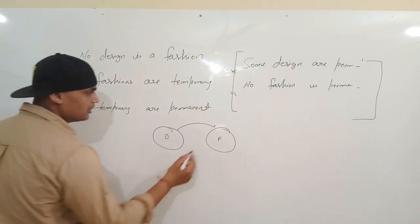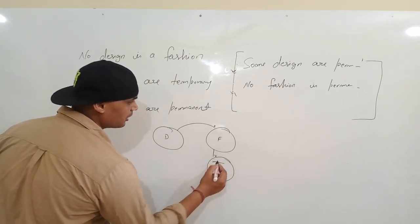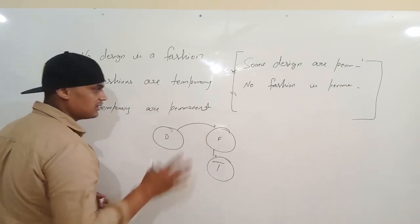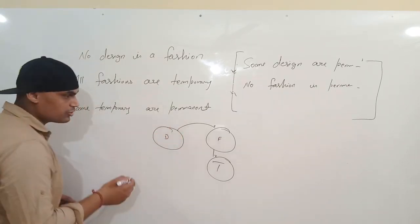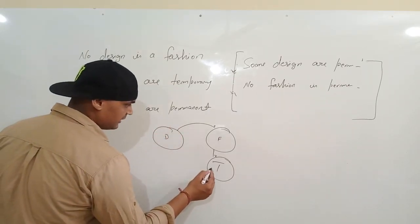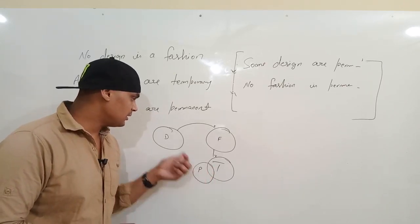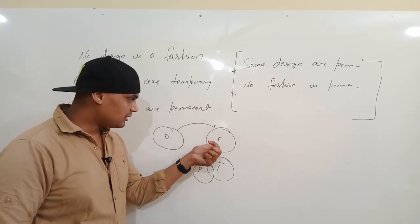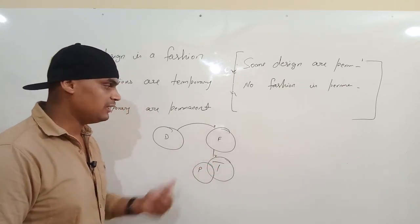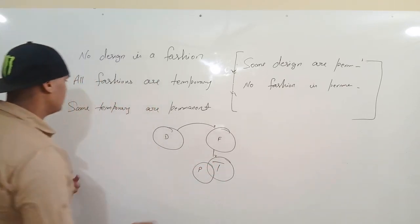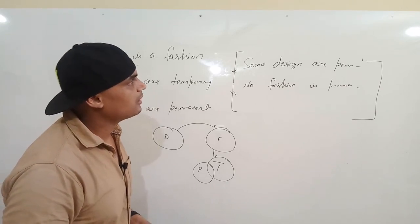Statement: 'No fashion is temporary' — F ka T ke saath koi connection nahi hoga. T ka D ke saath ho sakta hai lekin F ke saath nahi. Next: 'Some temporary are permanent' — kuch temporary permanent hain. Toh T ka relation P ke saath hai — standard format mein diagram banate hain.